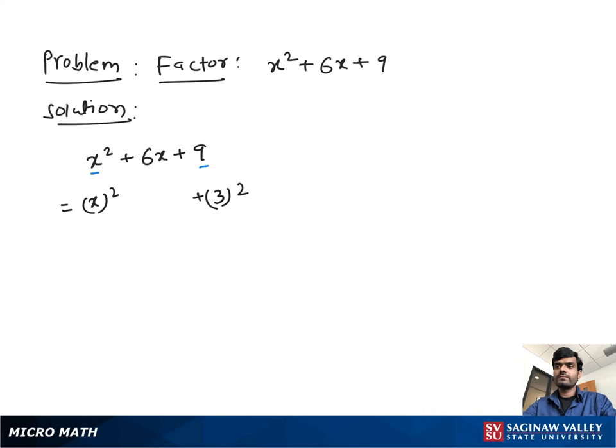If we see the formula (a + b) all squared, which is equal to a squared plus 2 times a times b plus b squared, which is also equal to (a + b) times (a + b).